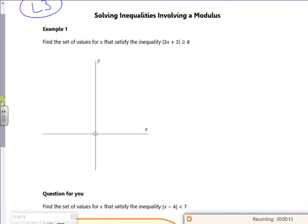So same idea, but I've got an inequality this time. So 3x plus 2, if I graph it, I know that the modulus of 3x plus 2 would look like that, crossing at 2, so 3x plus 2 is 0, so minus 2 thirds as a crossing point.